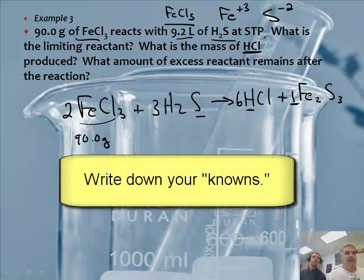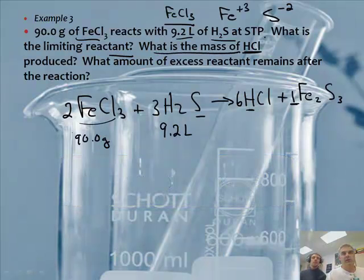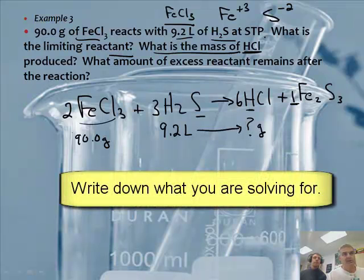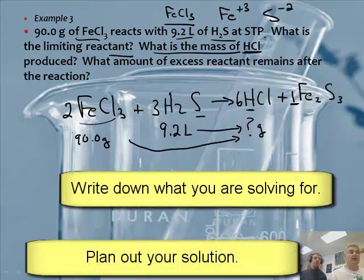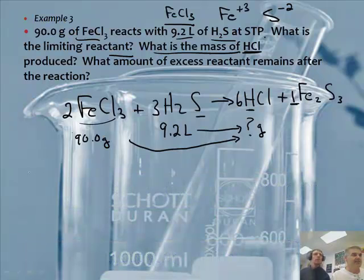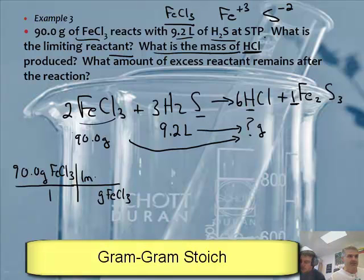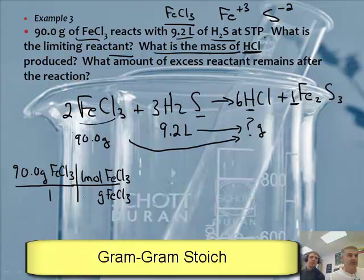So FeCl₃ — we have 90.0 grams, and we have 9.2 liters of H₂S. The question asks what is the mass of HCl. Now converting grams of FeCl₃ to moles: 56 plus 71 plus 35.5 is about 162.5. So 162.5 grams of FeCl₃ per mole.